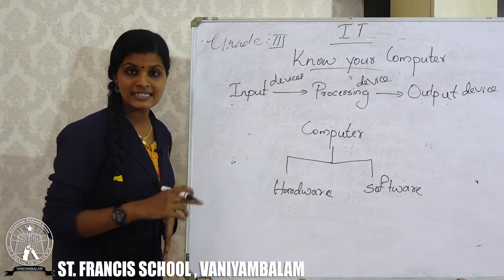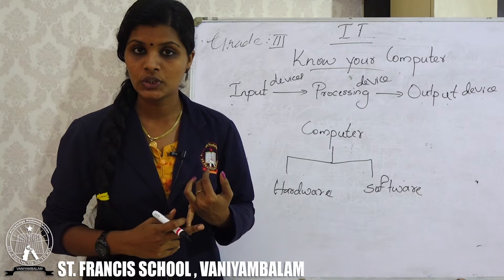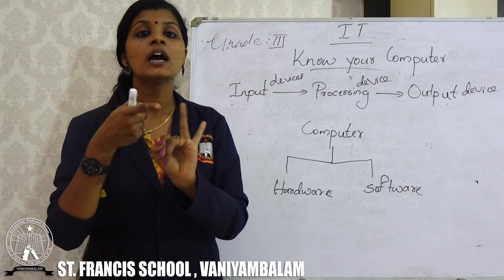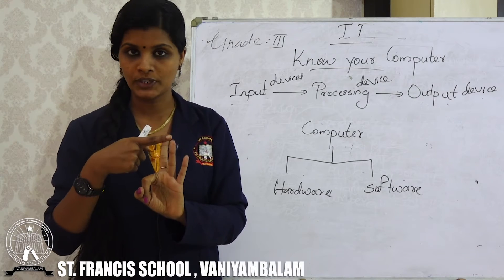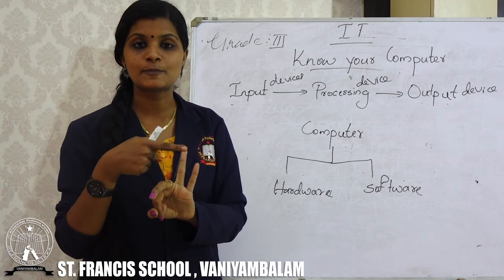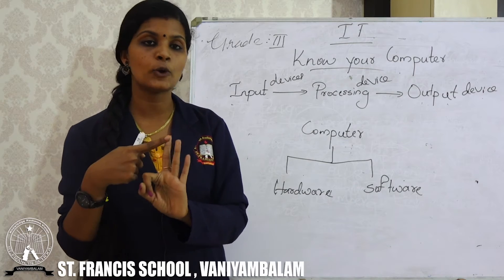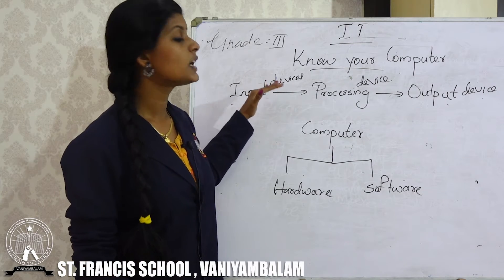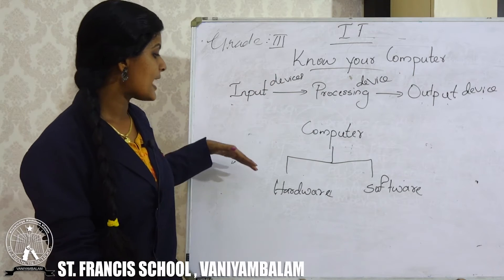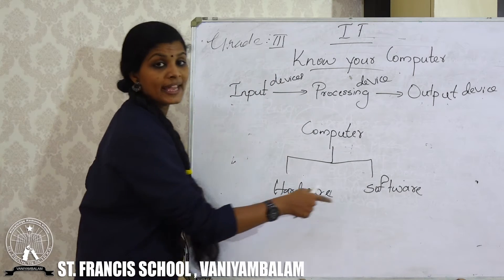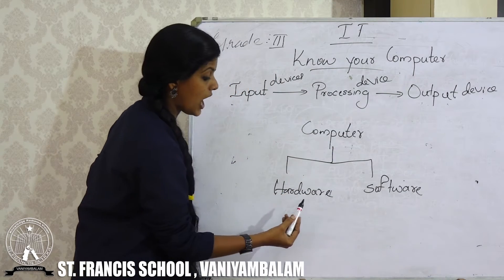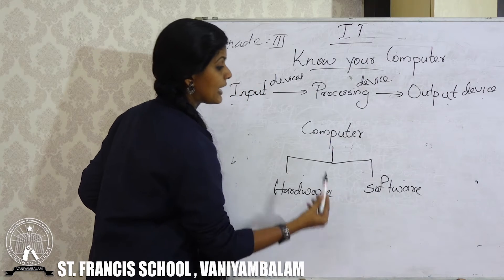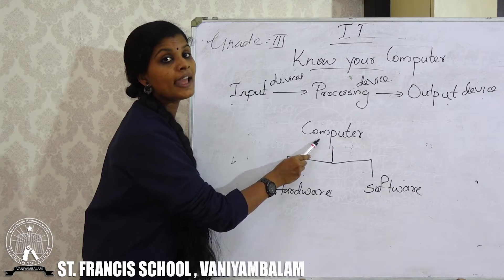So first of all, we discussed the working model of a computer. There are three steps involved: input, processing and output. We have also discussed two major elements of computer — they are hardware and software. Both of these help the computer to work properly.